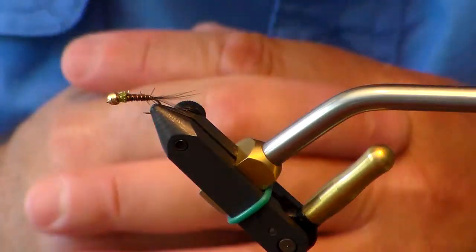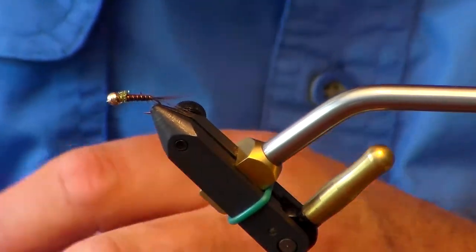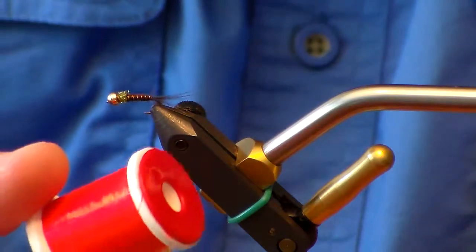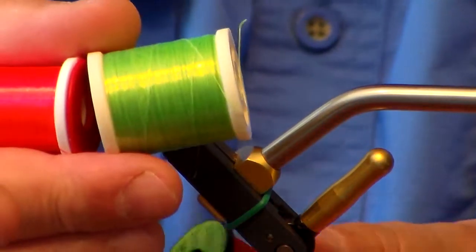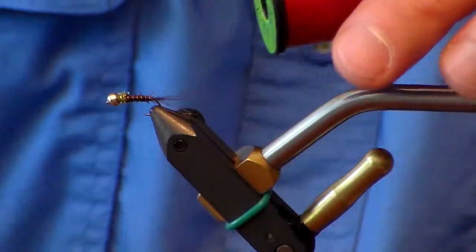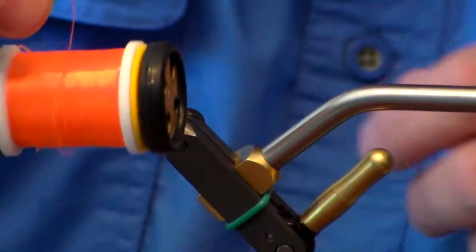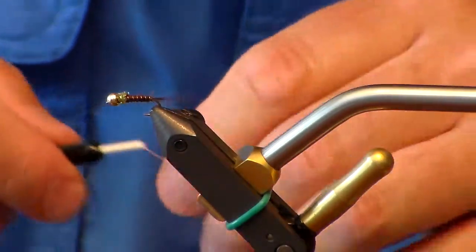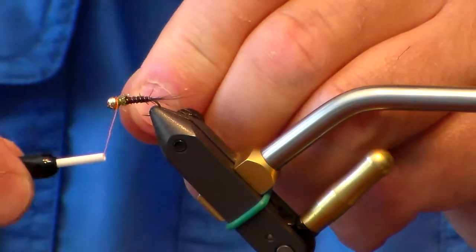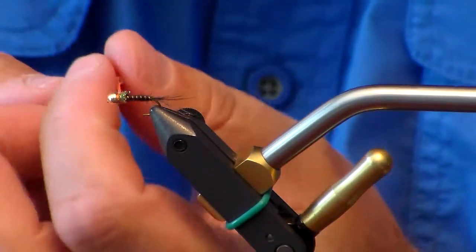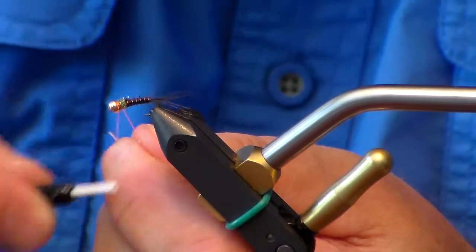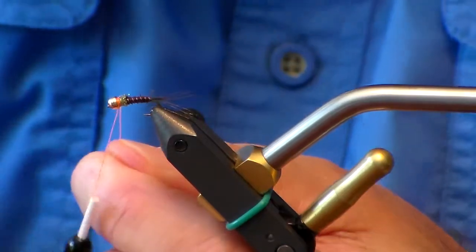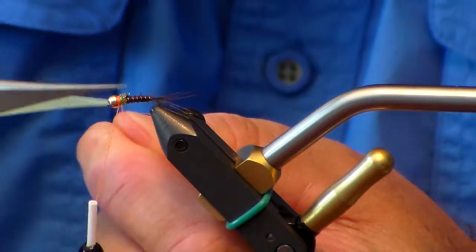Now at this point you could also use a fluorescent thread and make a hot spot. So if we wanted to do that, I've got some orange thread. And we'll put just a little bit of a hot spot on here. Just put this right in front, you don't need a whole lot. Now you can tie this off and then finish your fly with your whip finisher.